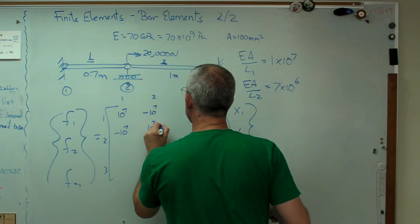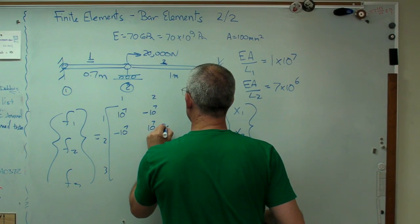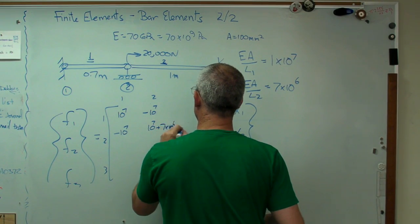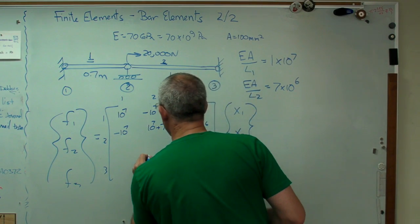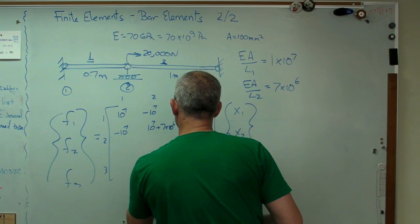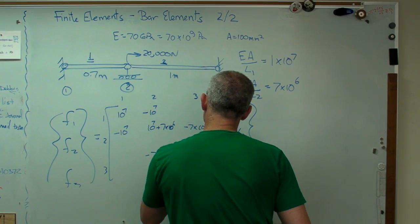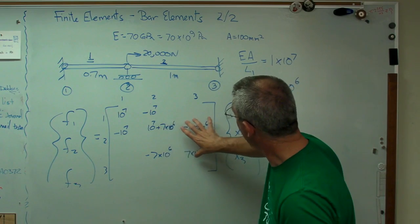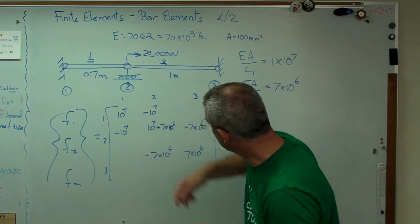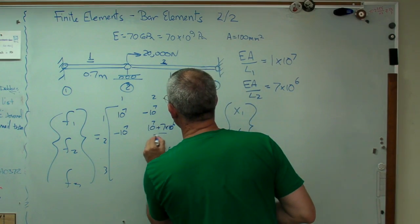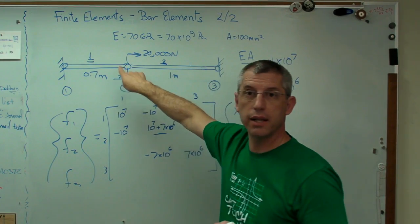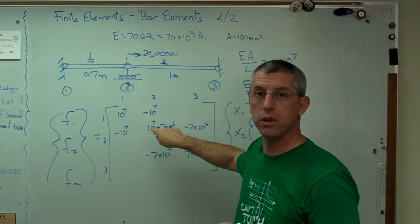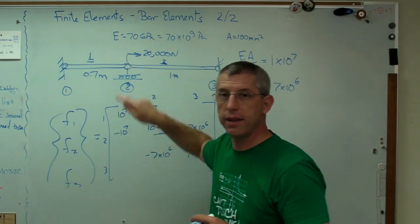I have to add plus 7 times 10 to the 6th there. 7 times 10 to the 6th. So minus 7 times 10 to the 6th. And 7 times 10 to the 6th. So there we go. That's the other element stiffness matrix. And see where they overlap right there? The reason they overlap is both elements are connected at that point. There's a stiffness contribution from both elements at that point.